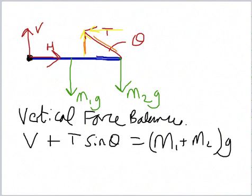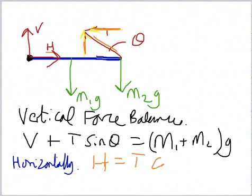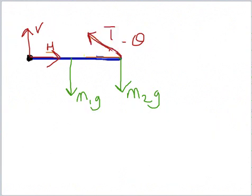And horizontally... The only horizontal forces are this one here, and that component there. So we have H must equal T cos theta. This time it's cos because it's adjacent over hypotenuse.